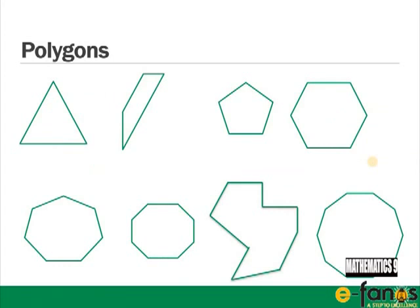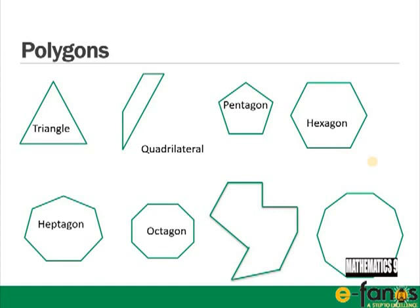Here are some examples of shapes that are polygons: a triangle with three sides, a quadrilateral with four sides, a pentagon with five sides, a hexagon with six sides, a heptagon with seven sides, an octagon with eight sides, a nonagon with nine sides, and a decagon with ten sides.